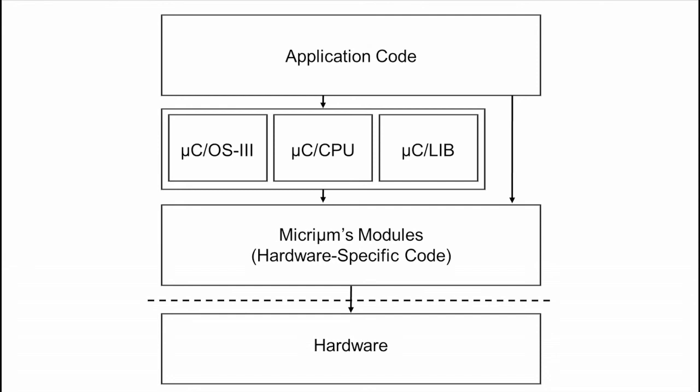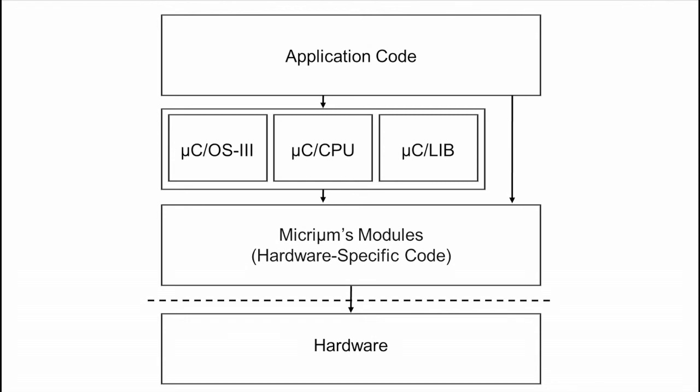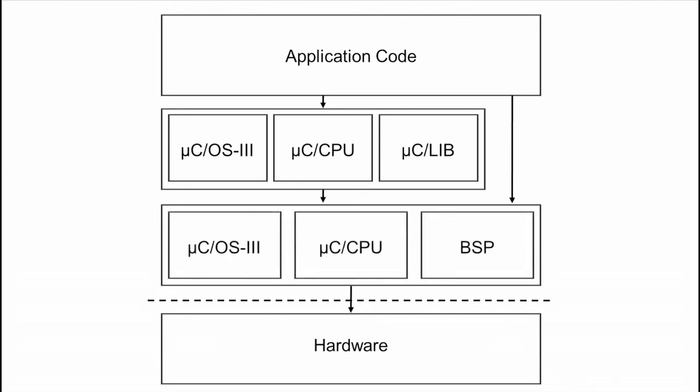The majority of the code contained in Micrim's modules is written in highly portable C. There is, however, a small amount of hardware-specific code required in a Micro-COS 2 or Micro-COS 3-based project. This code consists of a BSP, or board support package, and what are known as ports for Micro-C CPU and the kernels. In putting together your kernel-based project, you likely won't need to develop any ports, as a port is written for a CPU architecture and there are already Cortex-M3 and Cortex-M4 ports available for Micrim.